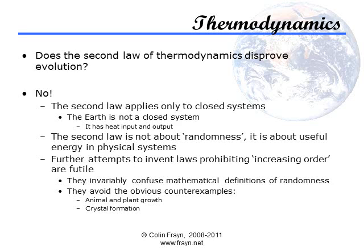The laws of thermodynamics were gradually uncovered by a range of scientists, mainly working in the 19th century, and form the core of the science of thermodynamics, which is fundamental to a wide range of applications, from mechanics and astrophysics to chemical engineering. There are four laws in total, numbered 0, 1, 2 and 3, and they refer to properties which, as far as we know, are always true for specific theoretical physical systems.